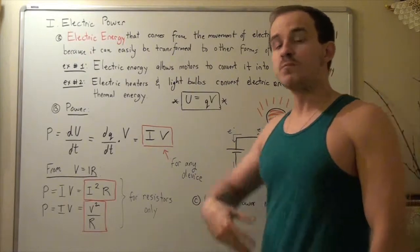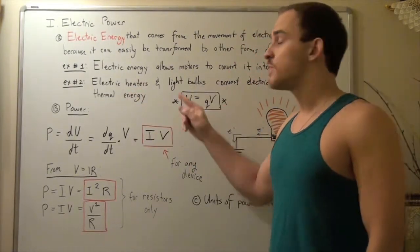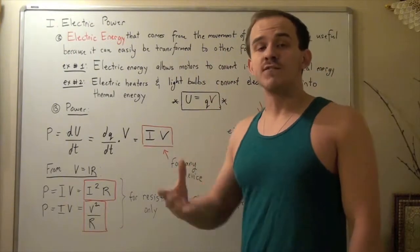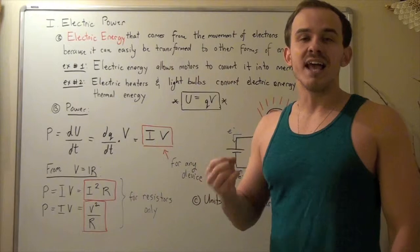Let's look at example number two. Things or devices such as electric heaters and light bulbs, which are resistors, convert electric energy into thermal energy as well as light energy.